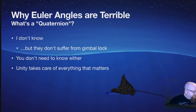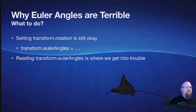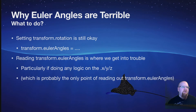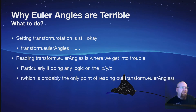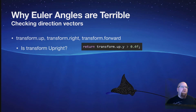So what do you do with this information? Setting transform.rotation is still okay — you can write transform.eulerAngles equals something and it's still perfectly valid. It's reading transform.eulerAngles where we get into trouble, especially if you're doing any logic with the x, y, or z. To check a direction vector — basically see if some part of the transform is pointing in a particular direction — you can use transform.up, transform.forward, or transform.right. To check if the transform is upright, check transform.up; if it's greater than a certain value, you are a certain closeness to being upright. I usually use around 0.4, which is about 45 degrees equivalent. One means perfectly straight up, but that's going to be too perfect — when doing math, you'll never quite get there.